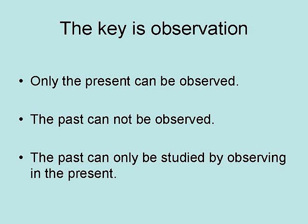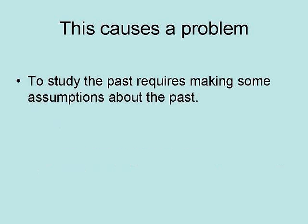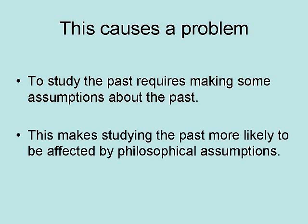Even distant starlight is observed only in the present, even if we do see stars as they looked in the past. This causes a problem because to study the past requires making some assumptions about the past. Even studying distant stars requires making assumptions about the history and structure of the universe. This makes studying the past more likely to be affected by philosophical assumptions.